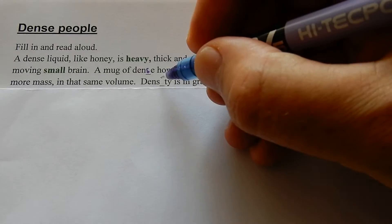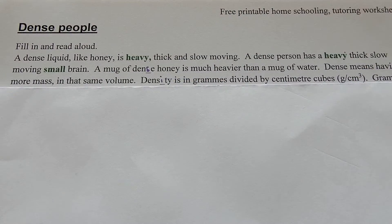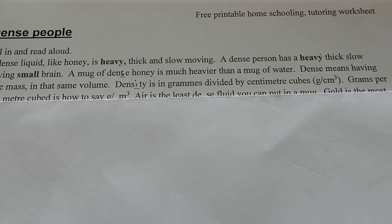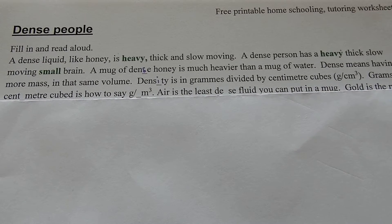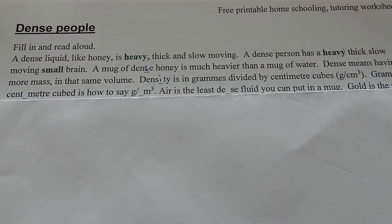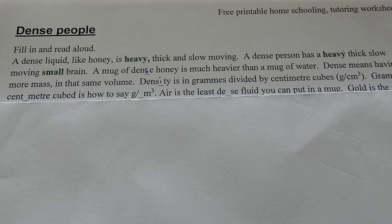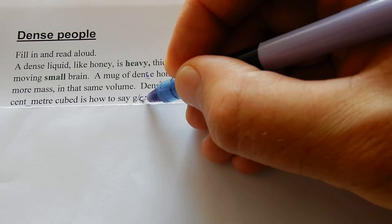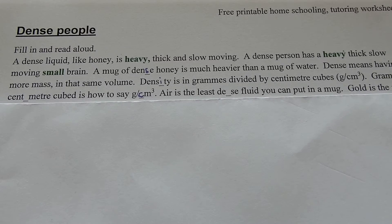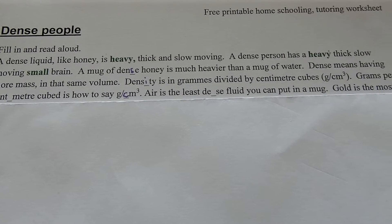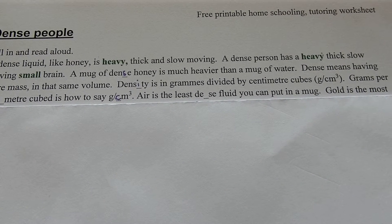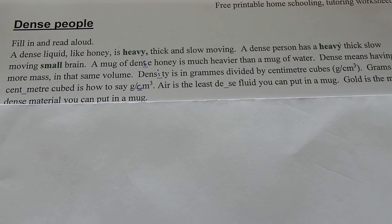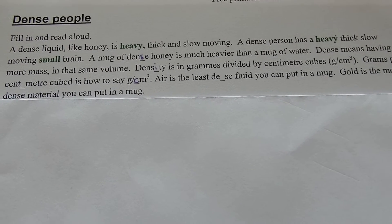Density is in grams divided by centimeters cubed — grams per centimeter cubed, written as g/cm³. Air is the least dense fluid you can put in a mug. Gold is the most dense material you can put in a mug.